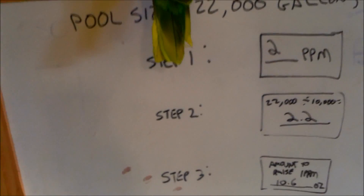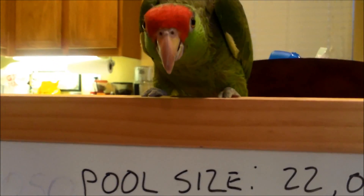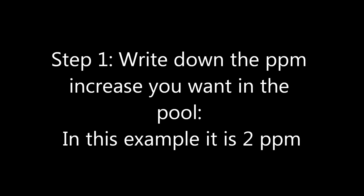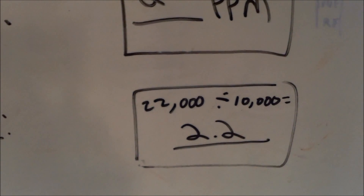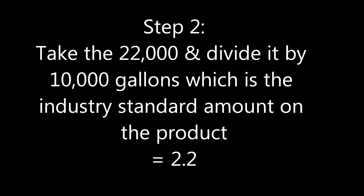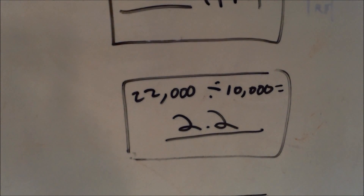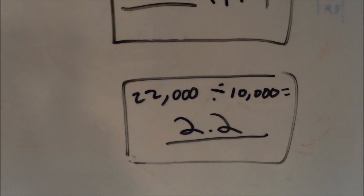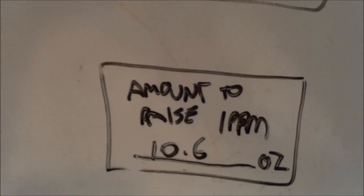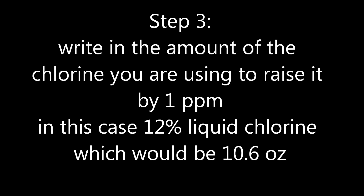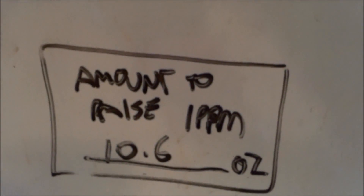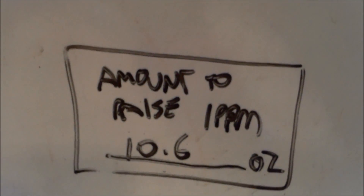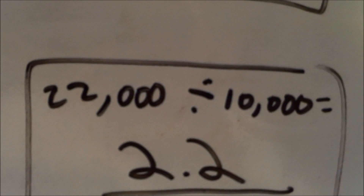Here's the example: you have a pool that is 22,000 gallons and you want to raise it by 2 parts per million. Step 2 is you take the 22,000 divided by 10,000 gallons, which is the standard amount used for dosage on the package or bottle. That comes out to 2.2. Step 3 is the amount it would take to raise it by 1 part per million. For 12% liquid chlorine, it takes 10.6 ounces to raise it 1 ppm in 10,000 gallons — I'll put that chart in the comments section.